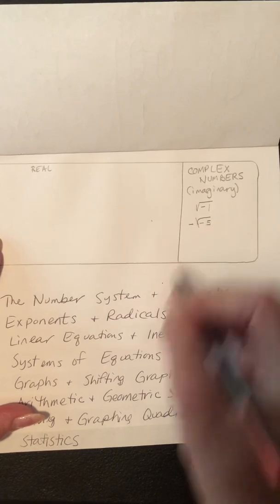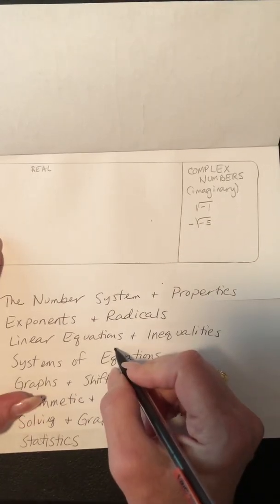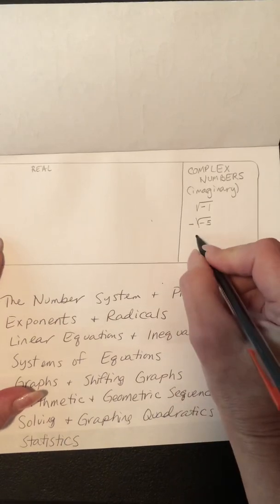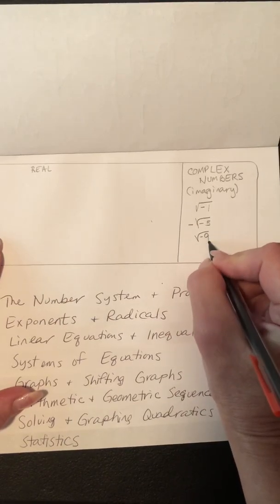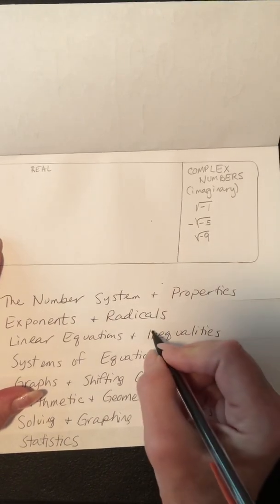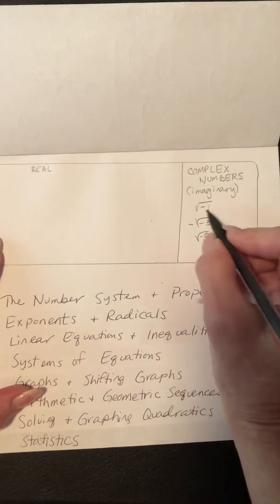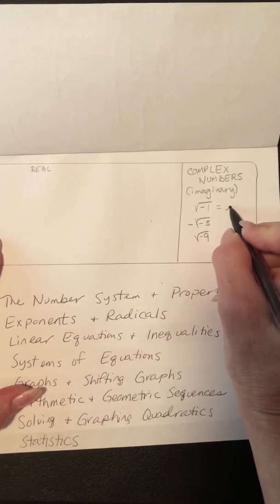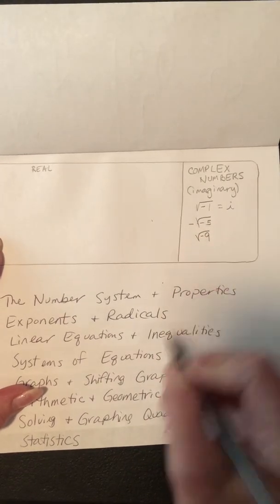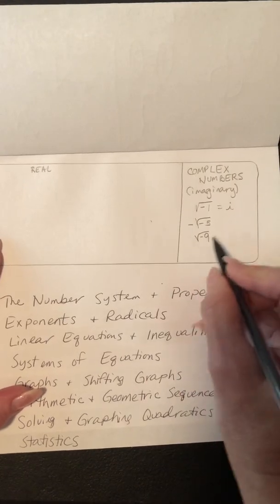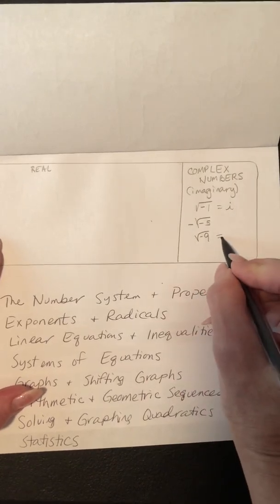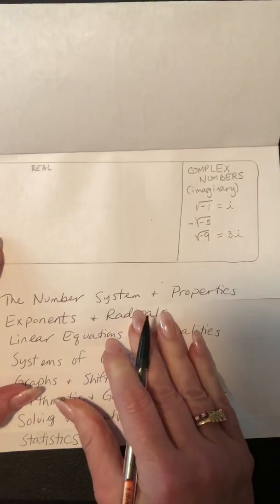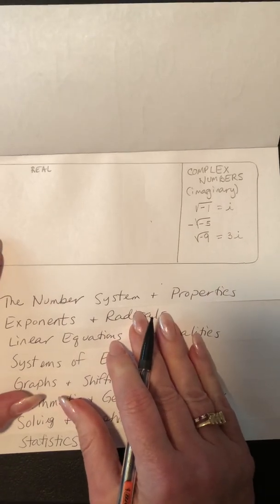The square root of negative 5 and the square root of negative 9 are imaginary numbers. When you get to Algebra 2, they'll tell you that the square root of negative 1 equals lowercase i, and the square root of negative 9 equals 3i. You won't need that until Algebra 2.